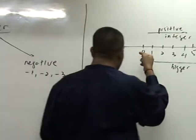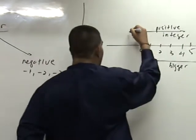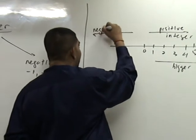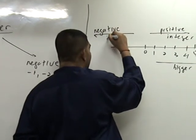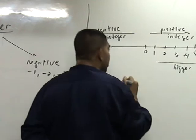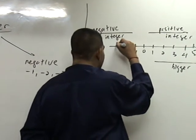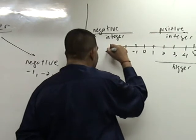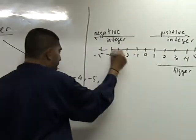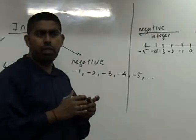Now, if you move to the left hand side, now you enter negative integer, negative integer. You enter negative integer, which is negative 1, negative 2, negative 3, negative 4, and negative 5, and so on, continuing.